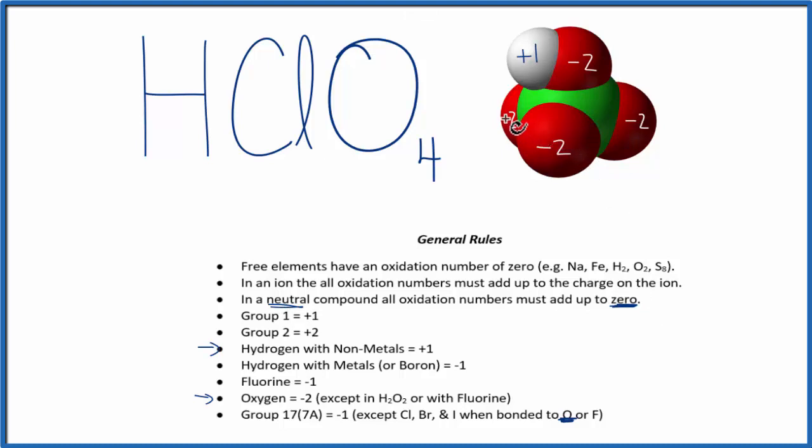So we could say, we have two, four, six, eight, minus eight, plus the one here, plus the oxidation number for the chlorine, which we don't know. All of this, including the chlorine, has to equal zero.